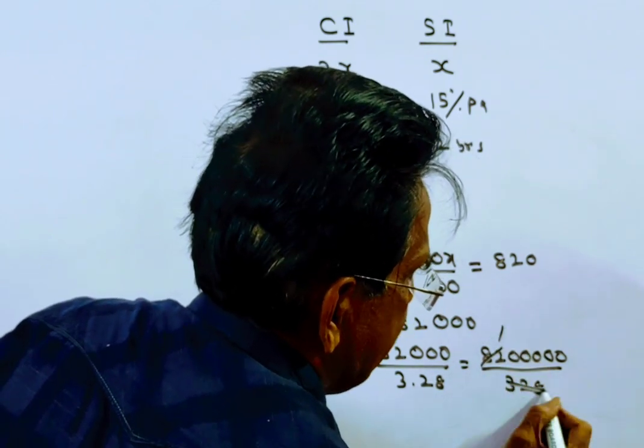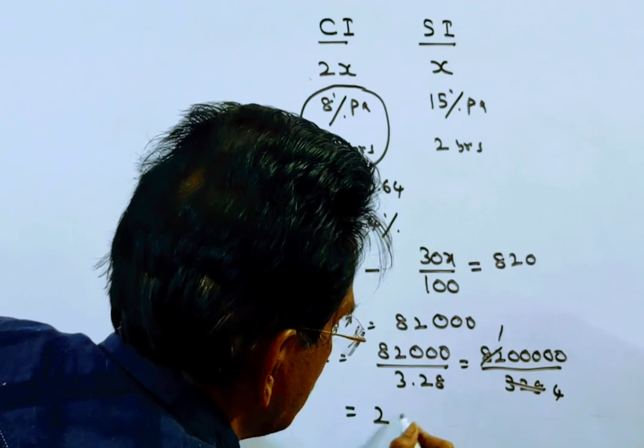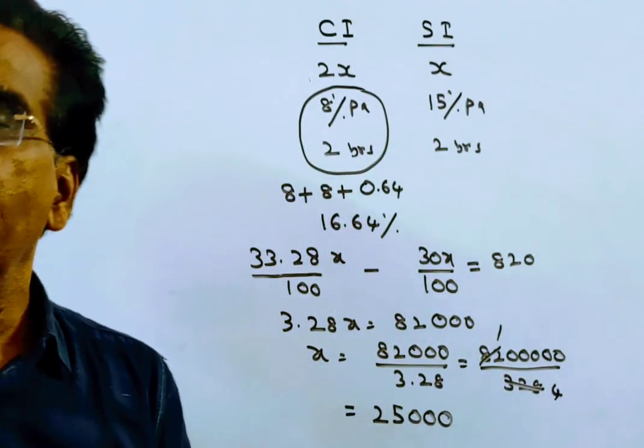82 ones, 82 fours, 1 lakh by 4. 1 lakh by 4 gives 25,000, which is the value of X.